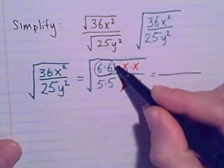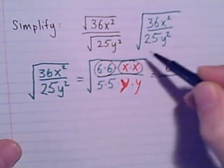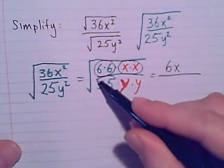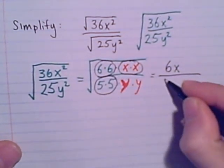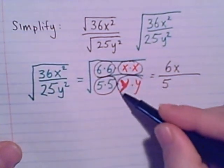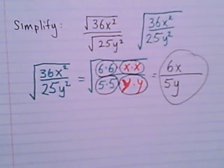So a pair of 6s can bring out 1 6. A pair of x's, there's the 1 x. A pair of 5s in the denominator, so it's 1 5 in the denominator, and a pair of y's, 1 y. There's our simplified fraction.